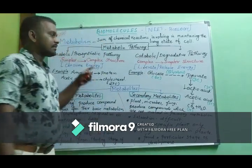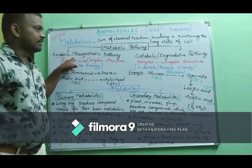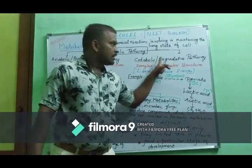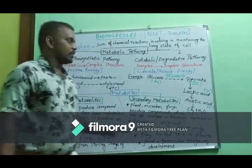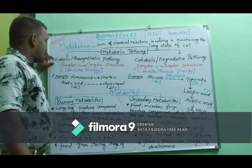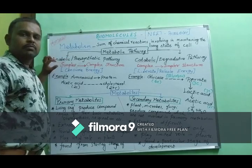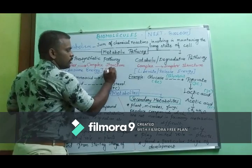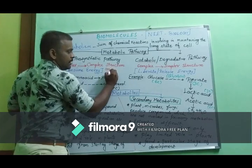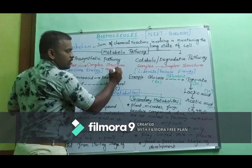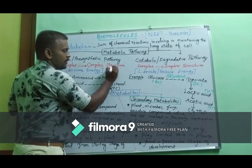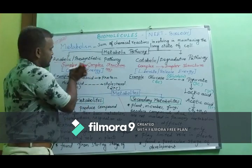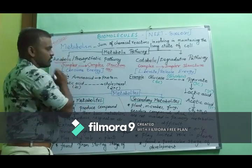Anabolism is called the biosynthetic pathway, and catabolism is called the degradative pathway. In anabolism, smaller molecules aggregate together to form larger, more complex structures.